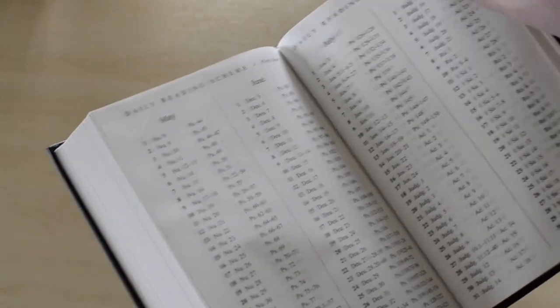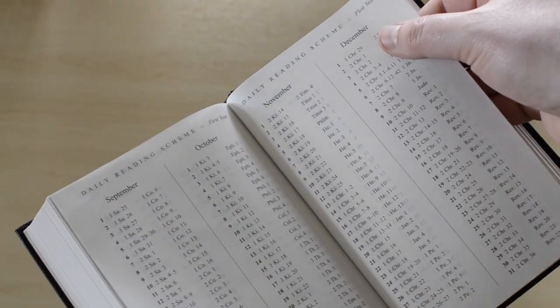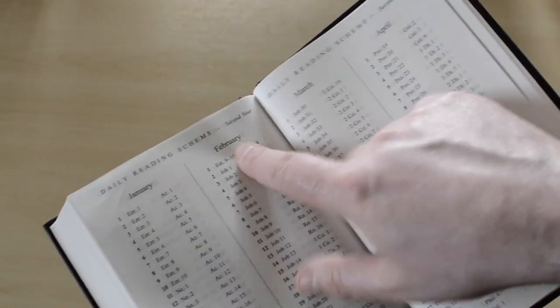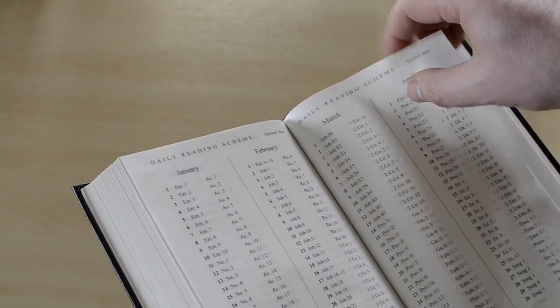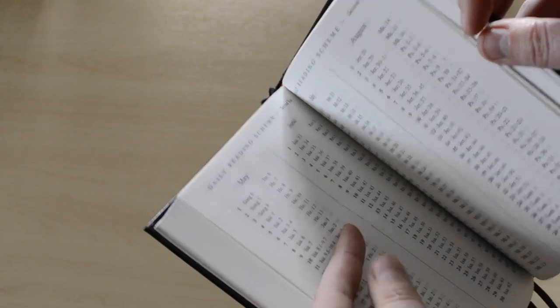It's the first year, it says here. First year. And then you have the second year, right here. So it's a two-year scheme for daily readings.